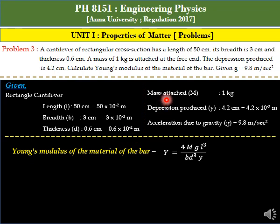Mass attached at the free end is 1 kg. Depression produced is 4.2 centimeter, that is 4.2 times 10 to the power minus 2 meter.